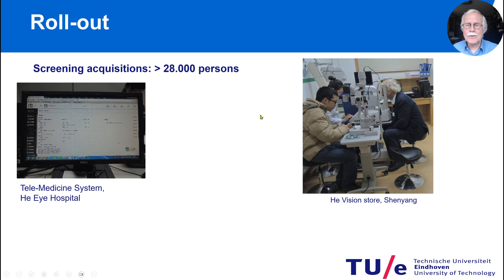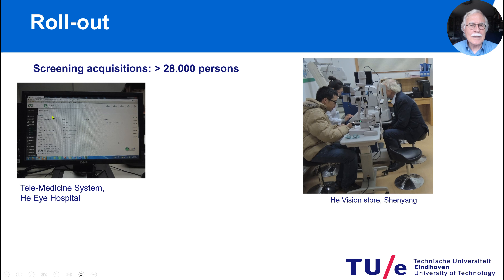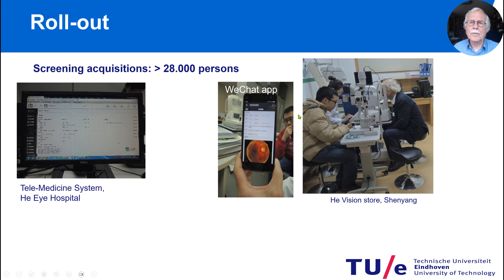After all our software engineering and writing publications, we managed to get a nice set of tools to do the real screening program. We managed to get 28,000 persons for our training of the neural networks and for our clinical study. It was all coupled to a telemedicine system of GI Hospital. We had acquisitions in vision stores, and even a WeChat app was developed so the patient could see their own retina and the first feedback from the system.